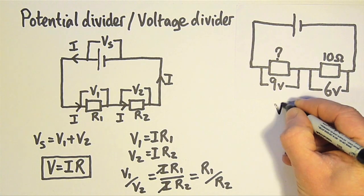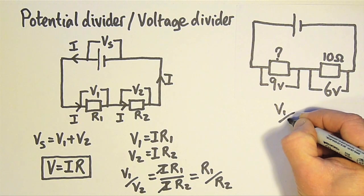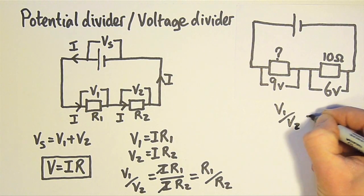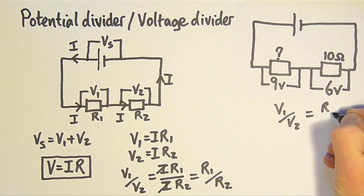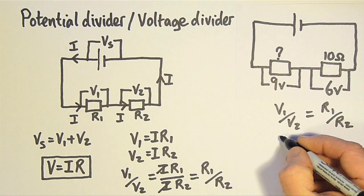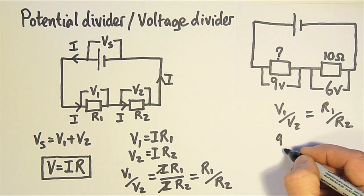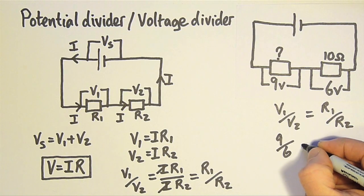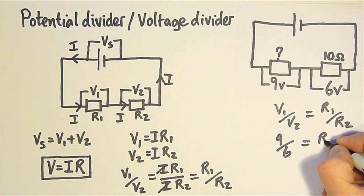Here's the formula that I'm going to use. V1 over V2 is equal to R1 over R2. V1 is 9 volts, and V2 is 6 volts. R1 is the unknown, and R2 is 10 ohms.